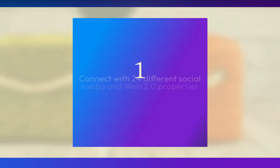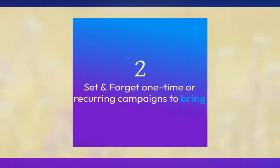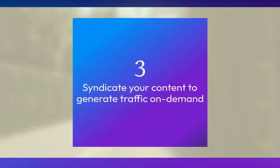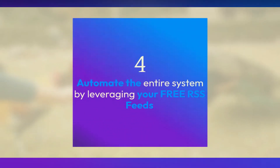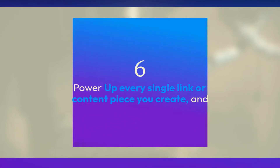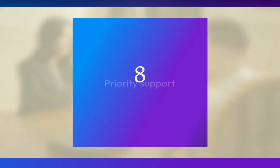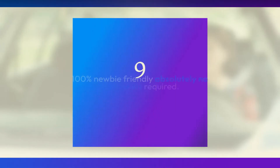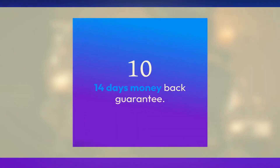Pros: Connect with 24 different social media and web 2.0 properties. Set and forget one-time or recurring campaigns to bring in warm traffic. Syndicate your content to generate traffic on demand. Automate the entire system by leveraging your free RSS feeds. Generate leads and sales with a proven method. Power up every single link or content piece you create. Commercial license to make money as a service. Priority support. 100% newbie friendly — absolutely no tech skills required. 14-day money-back guarantee. Cons: So far, none have been found.